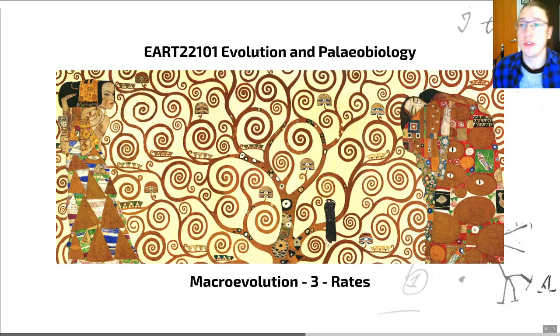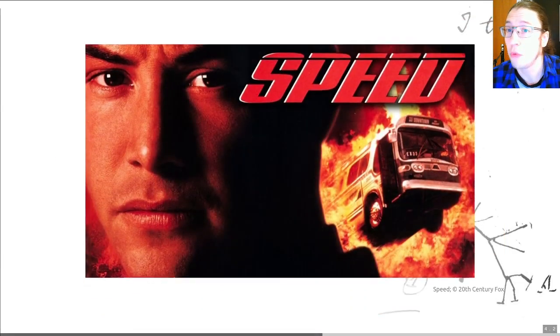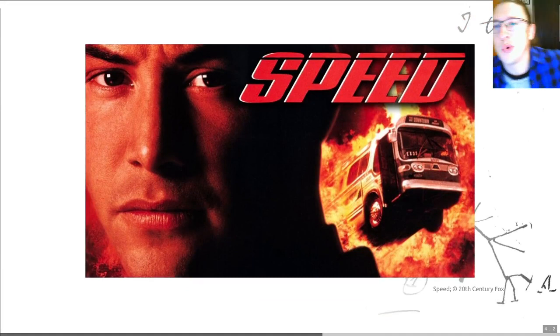The last video was a bit of a doozy - there was a lot of difficult content and it was quite long. This one will hopefully be shorter and more straightforward. When we talk about rates of evolution, represented by this fantastic film poster from 1992 for the movie Speed, we can think about rates of change in both genomes and morphology.